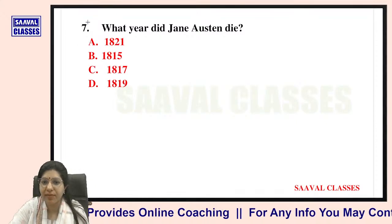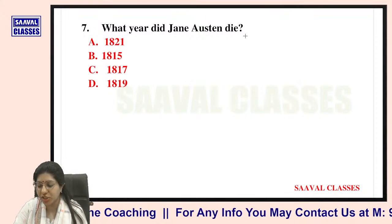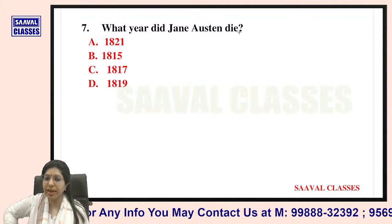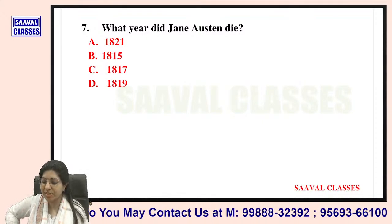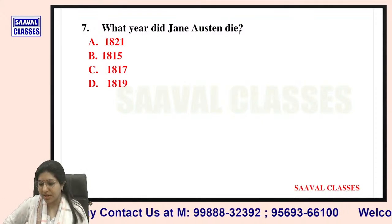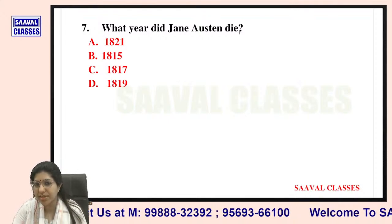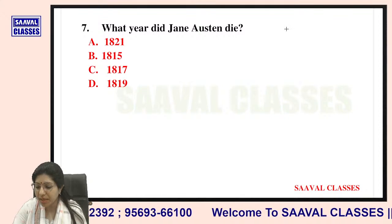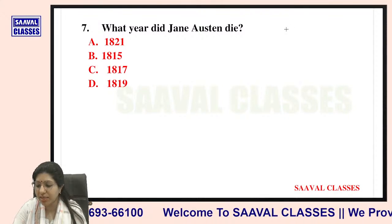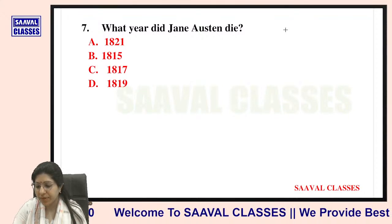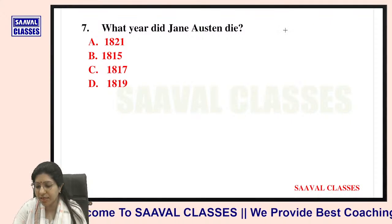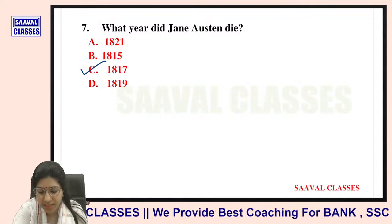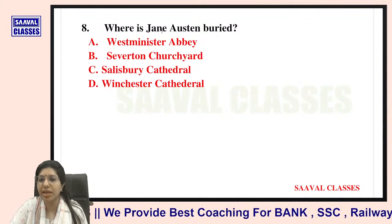Question number seven: What year did Jane Austen die? Options are 1821, 1815, 1817, or 1819. She died in 1817 — very right.